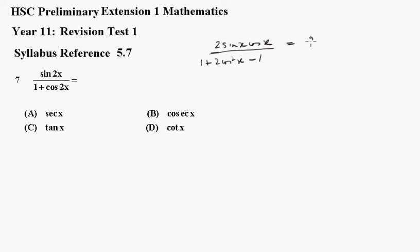Now that simplifies down to 2 sine x cos x all over 2 cos squared x. So the 2's cancel out and we get sine x over cos x, which is tan x, which is c.